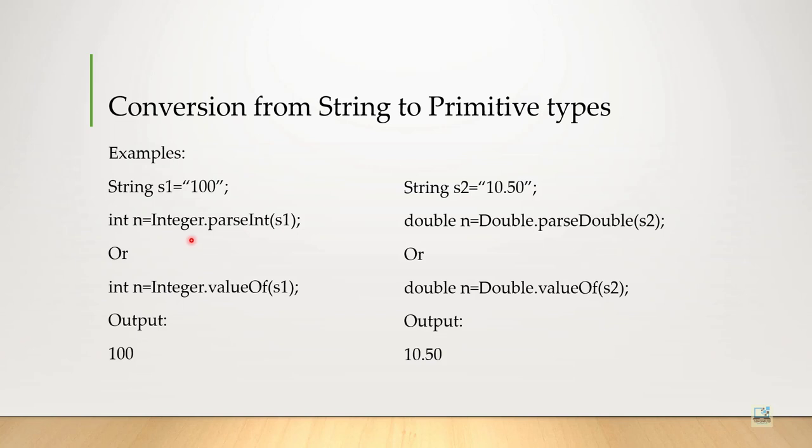Similarly, if you want to convert the string to float data type, then you write float dot parseFloat. Similarly, if you want to convert any string to double, you write double dot parseDouble.